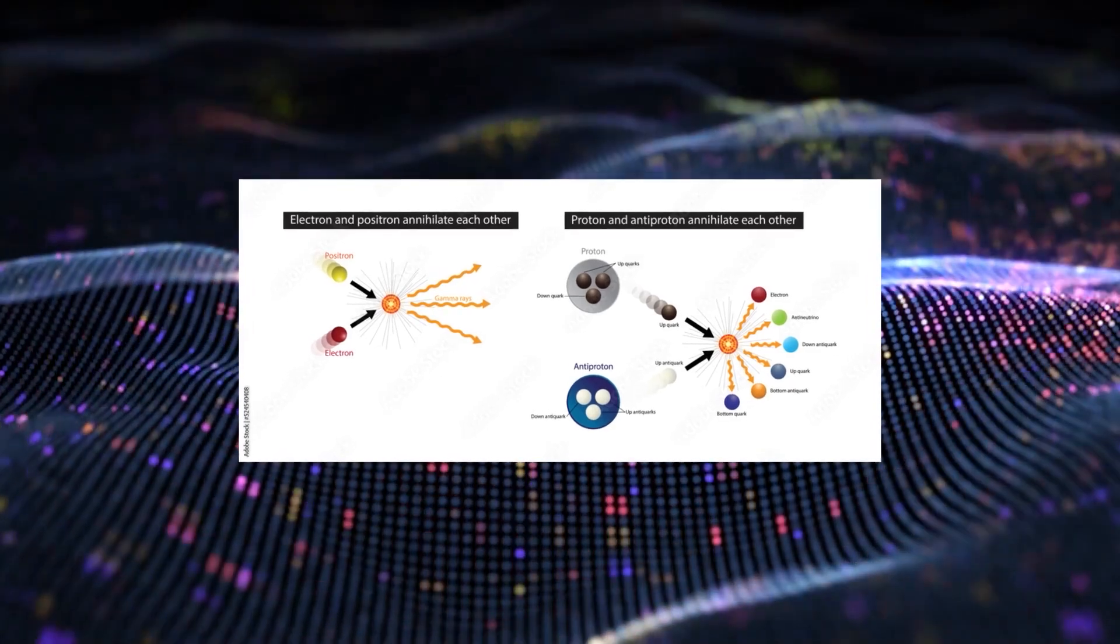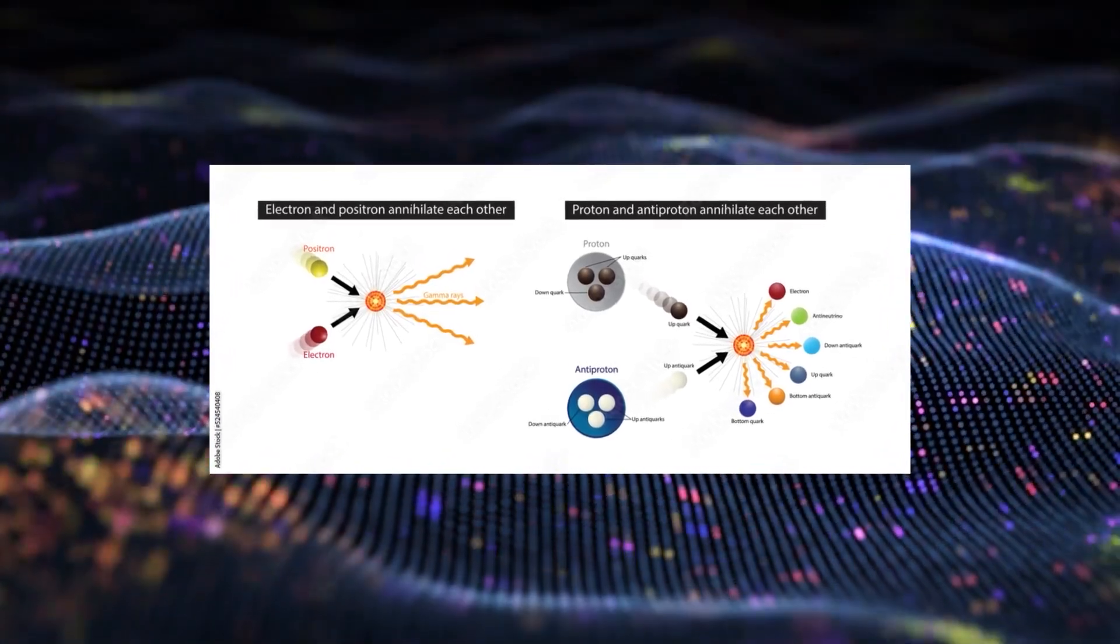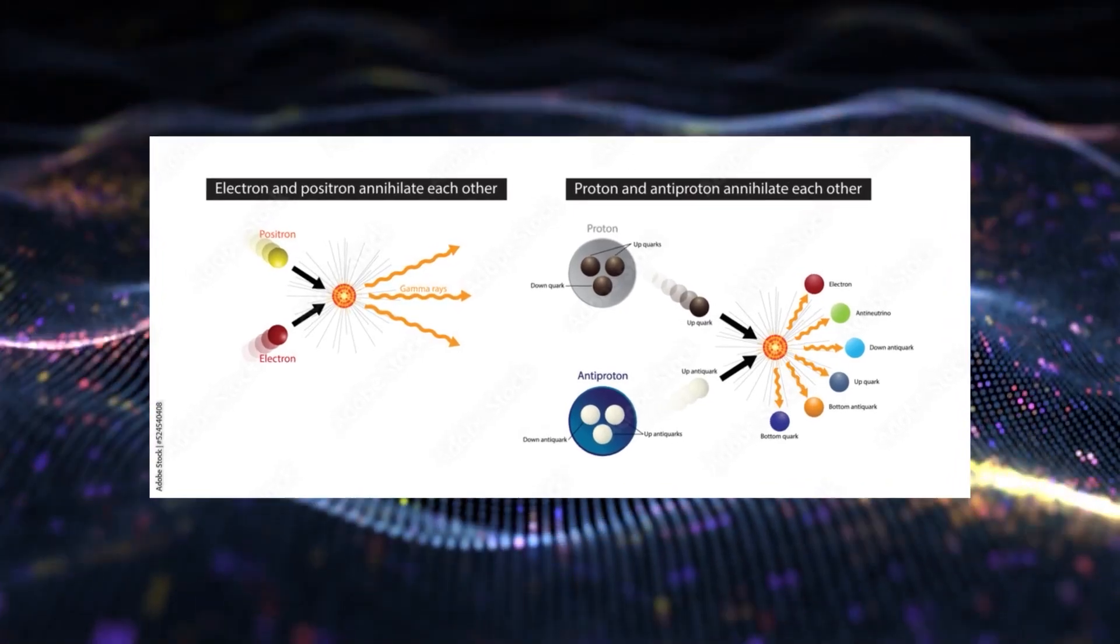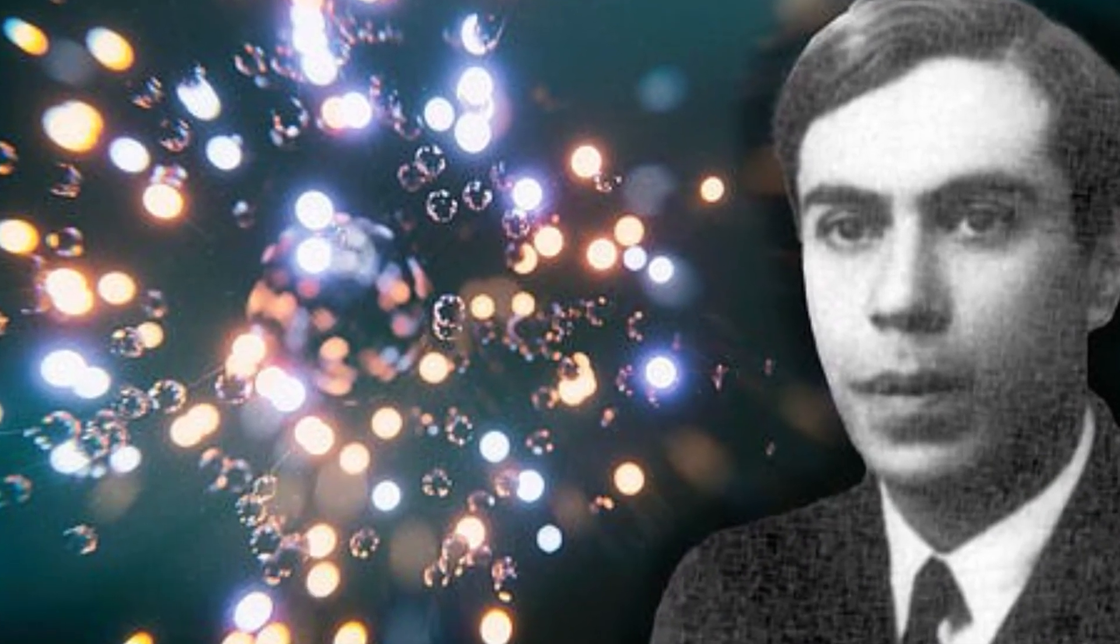Now, in physics, every particle usually has an opposite counterpart. Electrons have positrons, protons have antiprotons, and when they meet, they annihilate each other. But Majorana predicted a particle that was its own opposite.